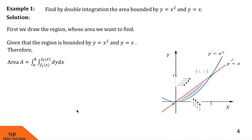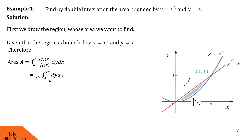Similarly, we throw arrows parallel to the x-axis to find the outside integral limits. We check which point these arrows touch first and last. These arrows touch the origin first — here x = 0, so the lower limit of x is 0. They touch the last point while leaving the region where x = 1, so the upper limit of the outside integral is 1. So these are the limits of y and x. Now we evaluate this double integral with integrand 1.